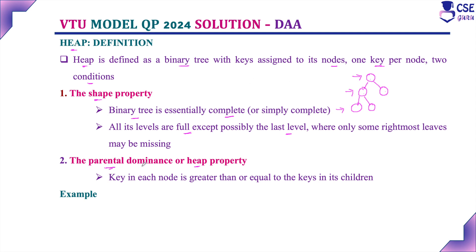The parental dominance property means the key in each node is greater than or equal to the keys in its children nodes. For example, if the root node has 2 children, the root node key should be greater compared to its children nodes. The root node should be the greatest element — the largest one. This is called the parental dominance property or otherwise the heap property.